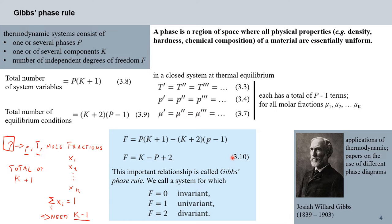This important relationship is called Gibbs phase rule. We call systems differently depending on their degrees of freedom: with F equals zero we have an invariant system, with F equals one a univariant system, and with F equals two a divariant system. We will see later what other degrees of freedom a thermodynamic system can have.